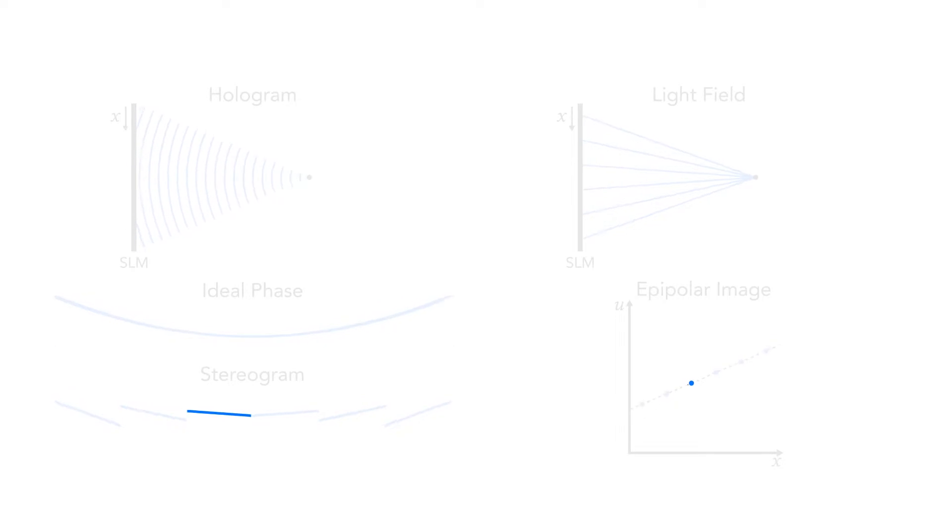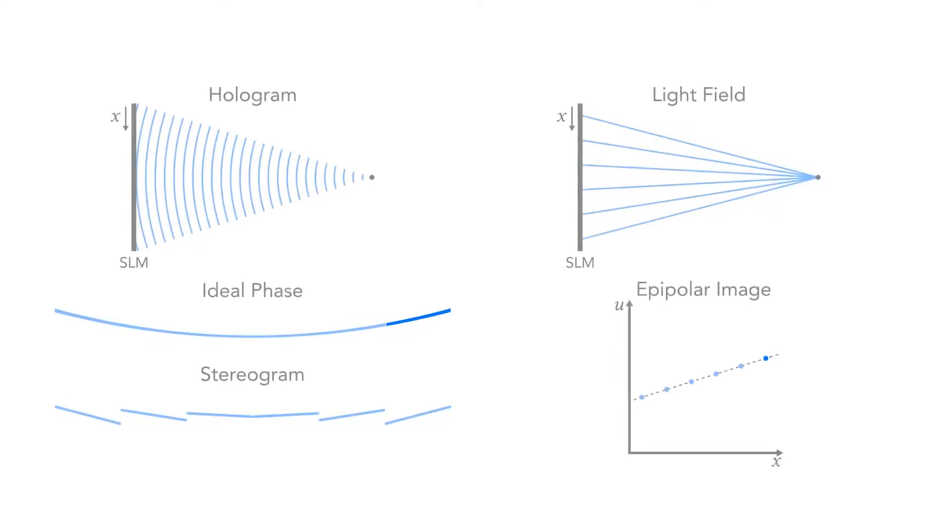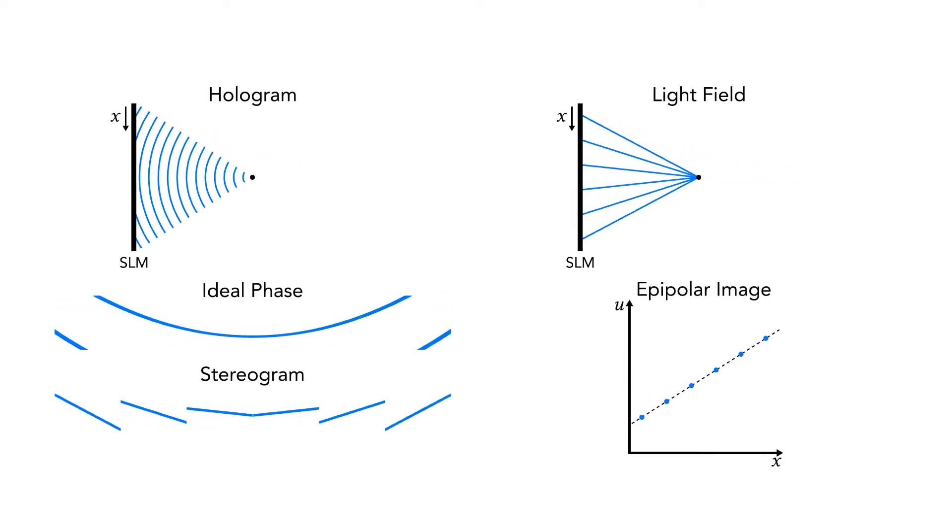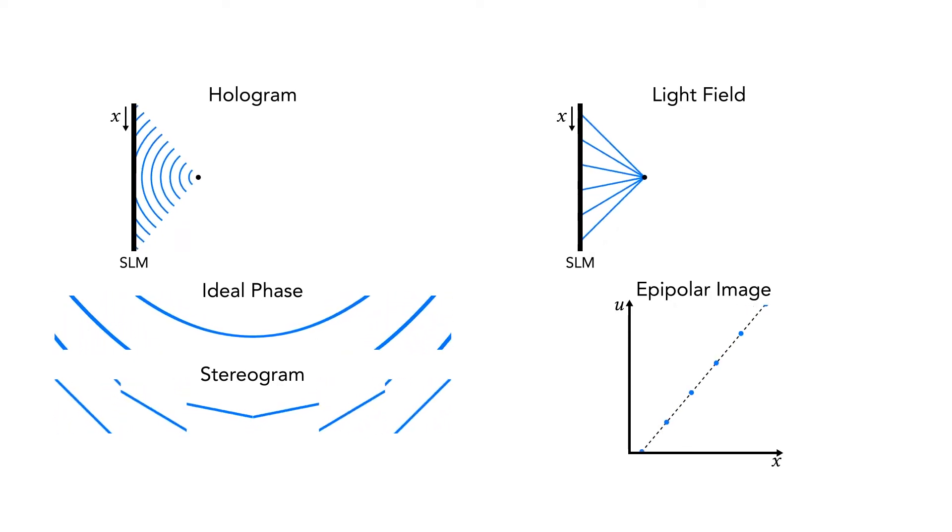It turns out that the Fourier transform of a single Hohgel of the stereogram corresponds to sampling a single spatial location within the epipolar image. In fact, if we were to window and FFT the ideal phase function, which is to say, the short-time Fourier transform or STFT, we would get the light field, with some blurring due to the space bandwidth product.